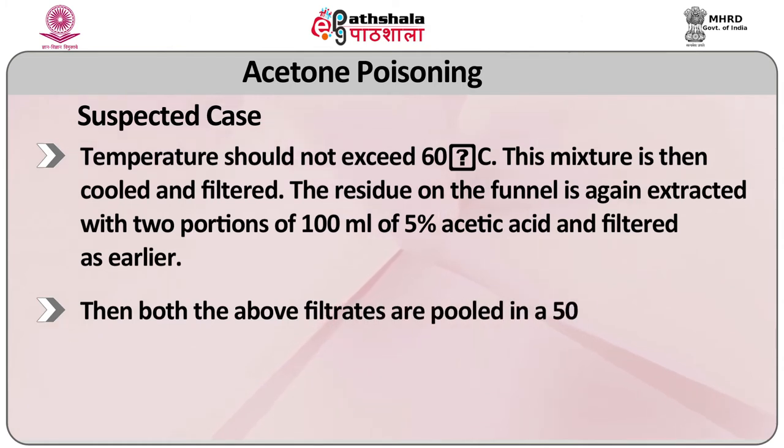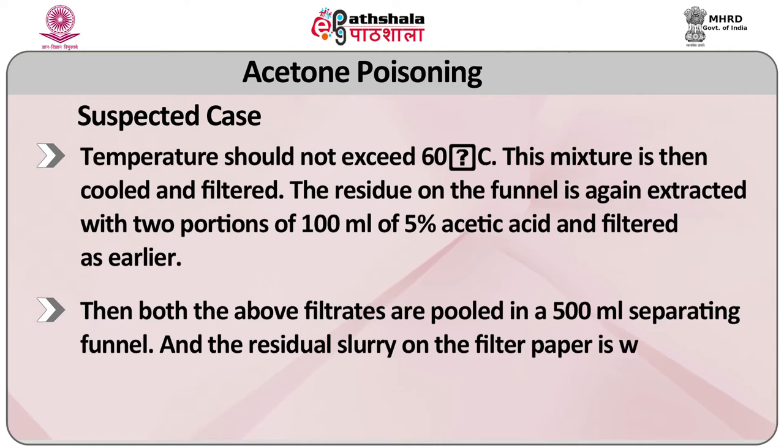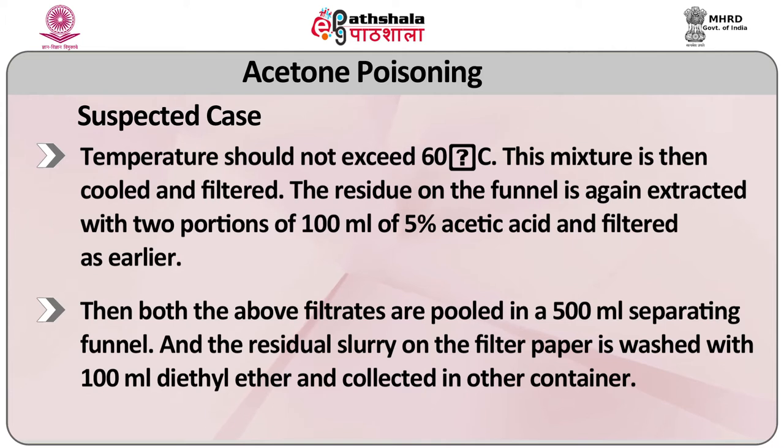Both filtrates are pooled in a 500 ml separating funnel, and the residual slurry on the filter paper is washed with 100 ml diethyl ether and collected in another container. The ether fraction so obtained is added to the aqueous acidic extract in the separating funnel, shaken vigorously for 5 minutes and then separated. 100 ml of ether is again added to the acidic layer, shaken vigorously for 5 minutes and separated. The combined ether layer is tested for aspirin, barbiturates, salicylic acid, benzodiazepines, lysergiates, etc. The aqueous solution remaining is made alkaline by addition of ammonium hydroxide and extracted thrice with 100 ml portions of chloroform-ether in a 1:3 ratio. The aqueous layer is retained for the extraction of opium alkaloids.